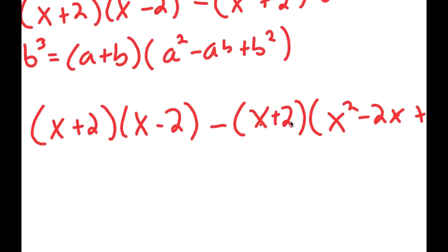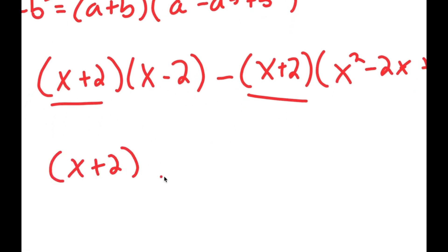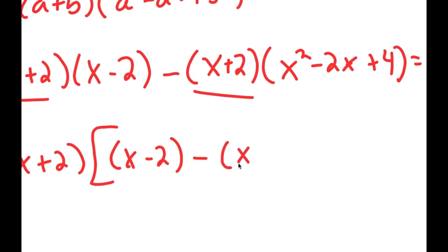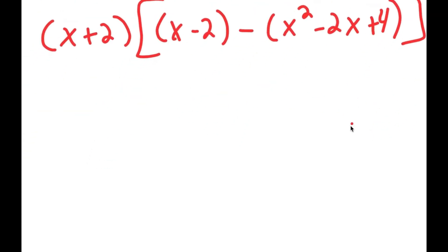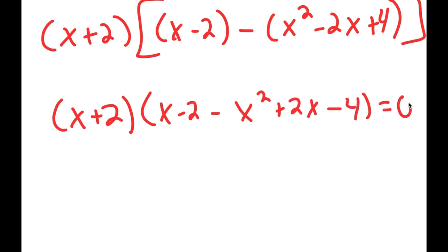Now notice how both of these terms have x plus 2 in them. So if I factor out x plus 2, I get x plus 2 times x minus 2 minus x squared minus 2x plus 4 is equal to 0. And this turns into x plus 2 times x minus 2 minus x squared plus 2x minus 4 is equal to 0.